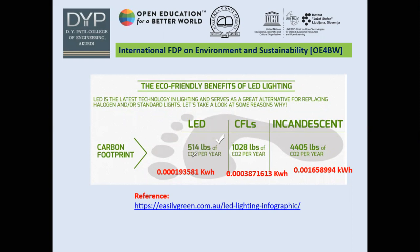The traditional incandescent bulb generates about 4,400–4,500 lbs of CO2 per year. When converting to kilowatt-hours: the LED is approximately 0.2 kWh, the CFL is about 0.3 kWh, and the incandescent is about 1.65 kWh. So using an LED bulb saves at least 50% compared to CFL, and more than 10 times compared to incandescent bulbs. We will therefore prefer LED bulbs in our home automation design.